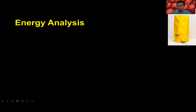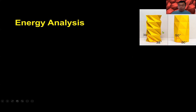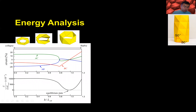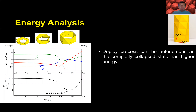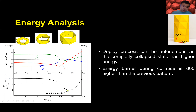Now a different pattern with angles 50 and 50 — the only difference from the previous one is the angle. Here is the energy and strain. Different pattern, different features. The deploy process can be autonomous, as the completely collapsed state has higher energy — so deploy is an autonomous process with only one equilibrium state. Also, the energy barrier to go back from the deployed state to the collapsed state is about 600 times higher than the previous case.